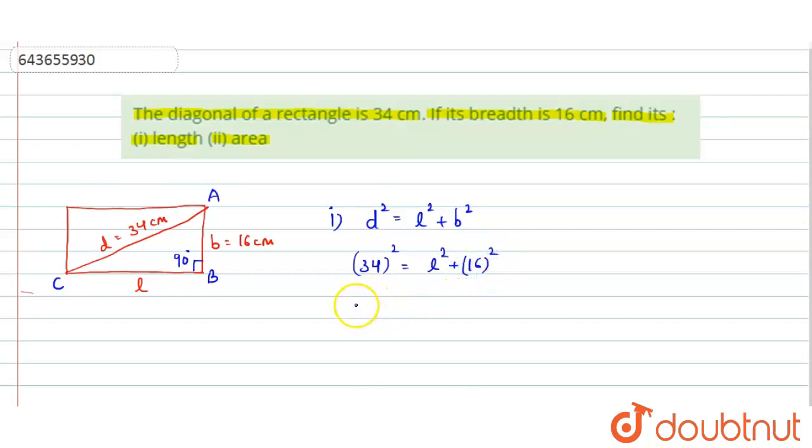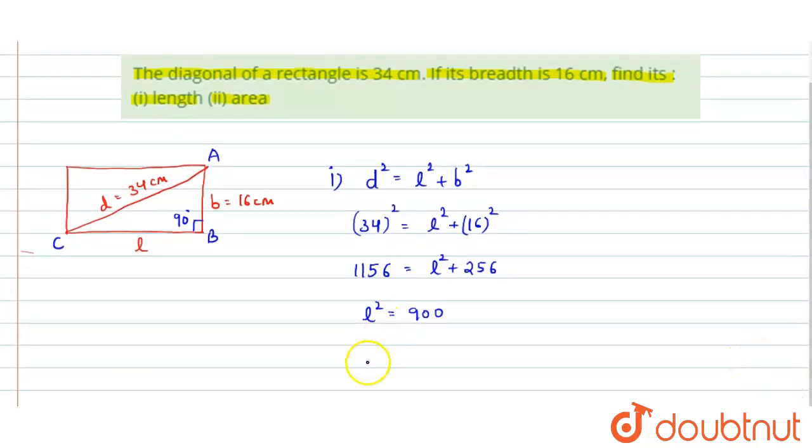34 square is equal to 1156 equals L square plus 16 square. We know that it is equal to 256. L square will come out to be 1156 minus 256, that is 900. Finally, we will get the value of length equals 30 cm.